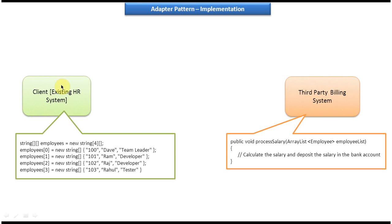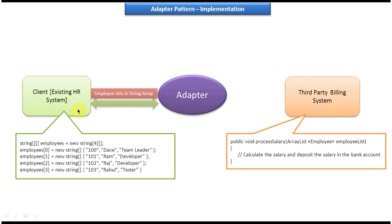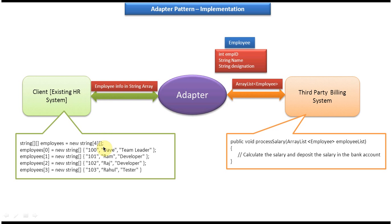The problem is this existing HR system doesn't want to change the code and this third-party billing system also doesn't want to change the code. So how can we make these incompatible systems work together? The only solution is an adapter. We have to introduce an adapter in between the existing HR system and the third-party billing system. The HR system makes a call to the adapter passing employee information as a string array. The adapter reads the employee information string array, formulates employee objects, makes a list of employees, and passes it to the process salary method. In this way we can make incompatible interfaces work together.